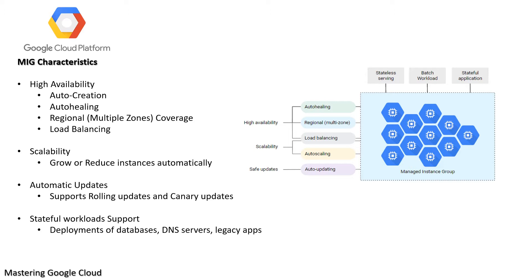Scalability: When your application requires additional compute resources, auto-scaled MIGs can automatically grow the number of instances in the group to meet demand. If demand drops, auto-scaled MIGs can automatically shrink to reduce your costs.